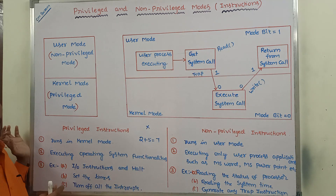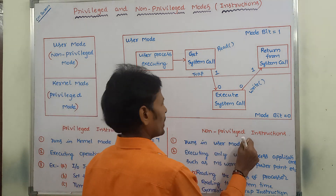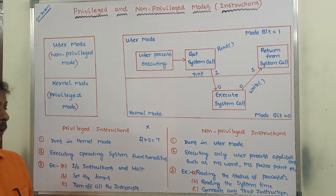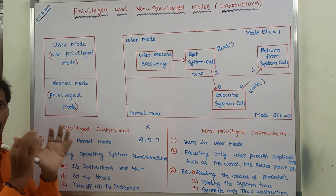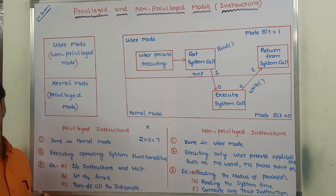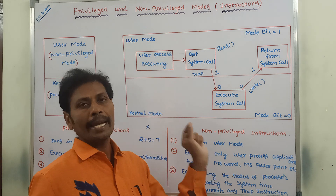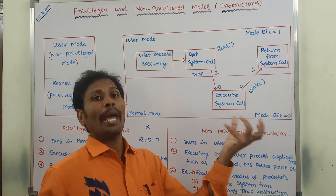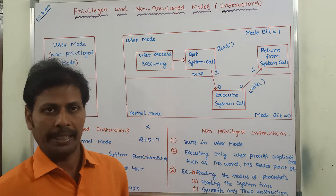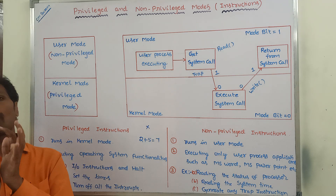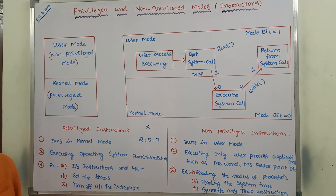Privileged instructions run only in the kernel mode, whereas non-privileged instructions run only in the user mode. Suppose we are in kernel mode and want to execute a non-privileged instruction — at that time we get a runtime error. Similarly, suppose we are in non-privileged mode and want to execute a privileged instruction — at that time also we get a runtime error. That means if we are in one mode and want to execute an instruction for another mode, we get a runtime error.